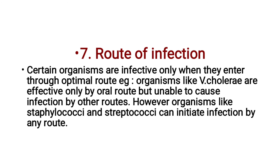Route of Infection: Certain organisms are infective only when they enter through the optimal route. For example, Vibrio cholerae is effective only by the oral route but unable to cause infection by other routes. However, organisms like Staphylococcus and Streptococcus can initiate infection by any route.